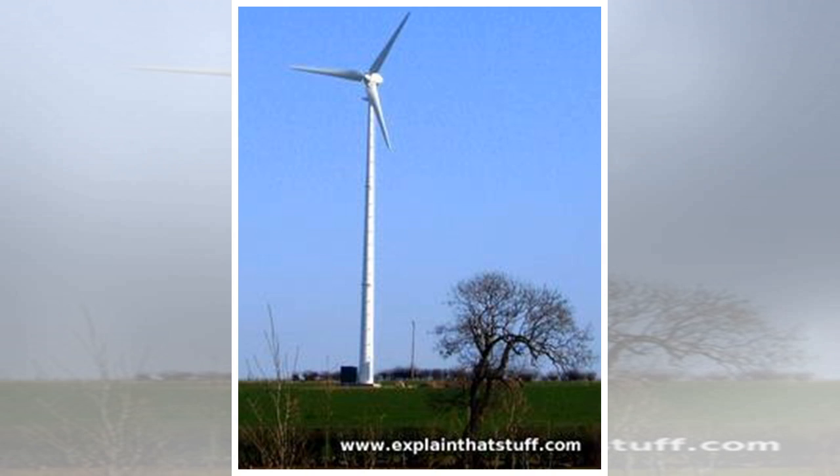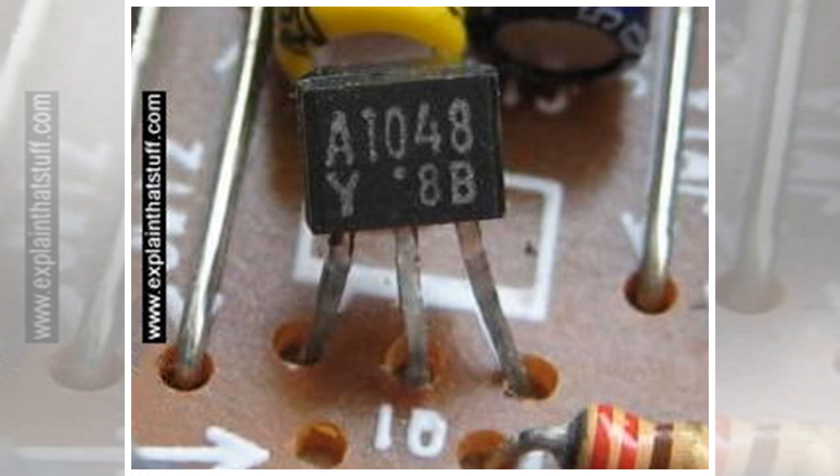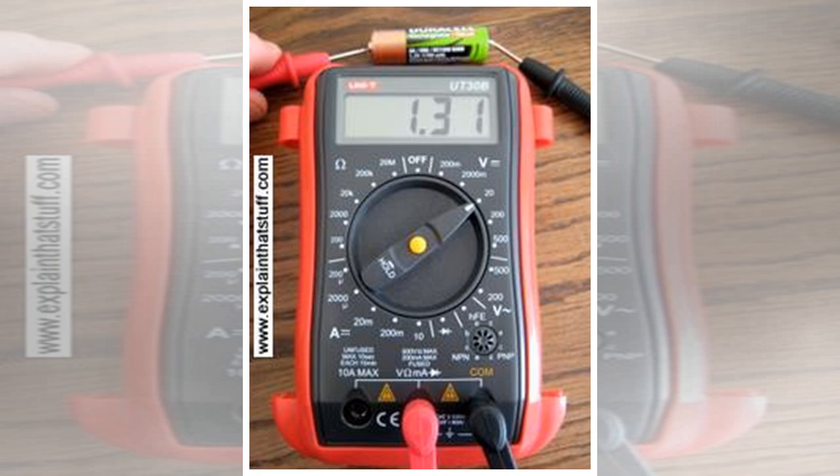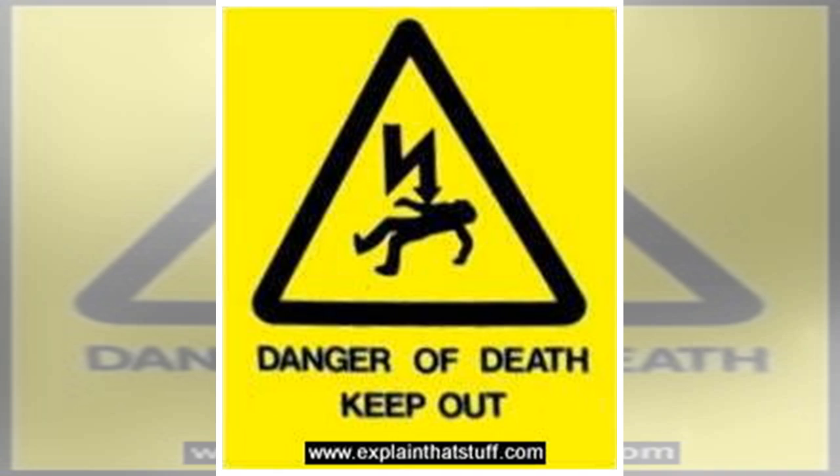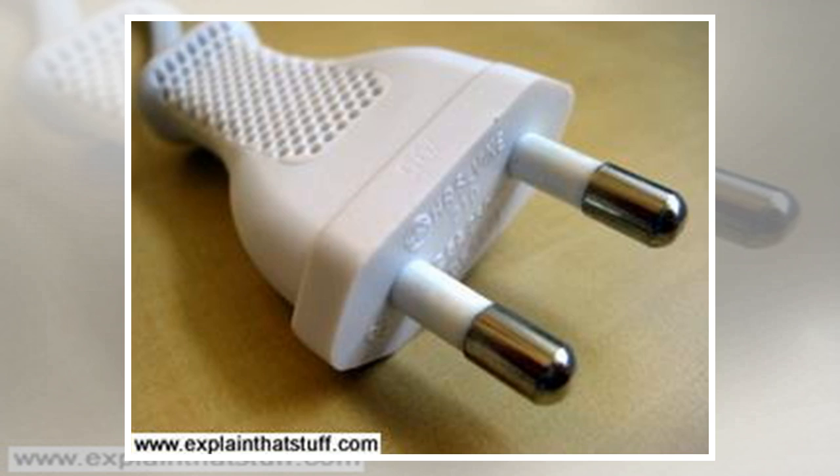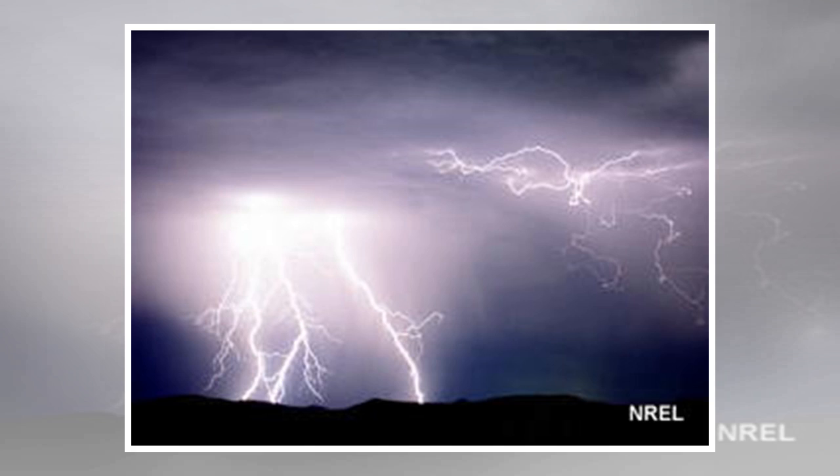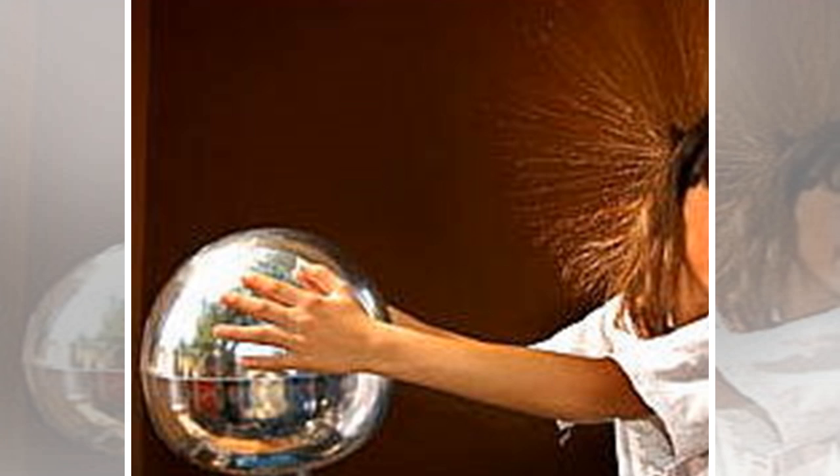Energy: Power is a measurement of how much energy you're using each second. To find out the total amount of energy an electric appliance uses, you have to multiply the power it uses per second by the total number of seconds you use it for. The result you get is measured in units of power times time, often converted into a standard unit called the kilowatt-hour. If you used an electric toaster rated at 1,000 watts for a whole hour, you'd use one kilowatt-hour of energy. Electricity meters show the total number of kilowatt-hours of electricity you've used. One kilowatt-hour is equal to 3.6 million joules of energy.